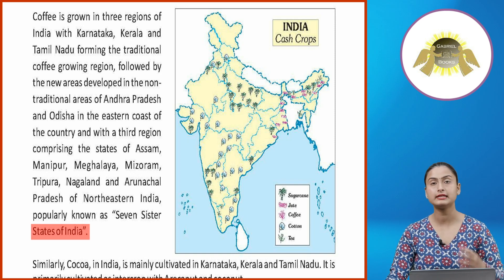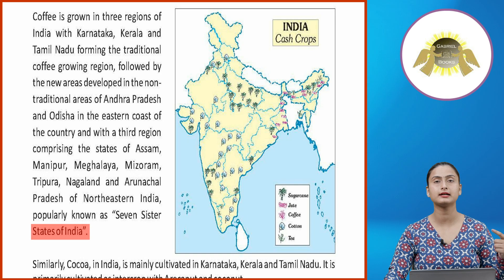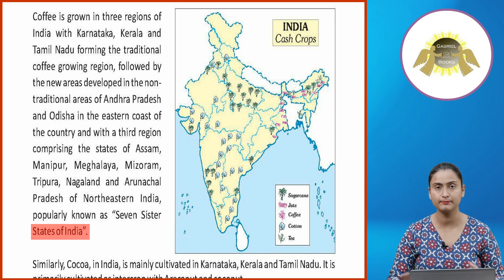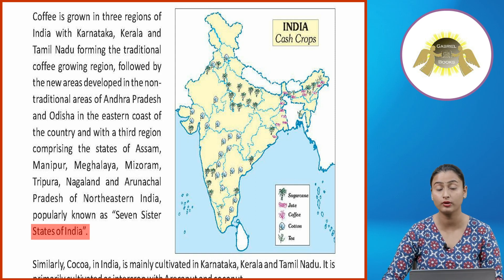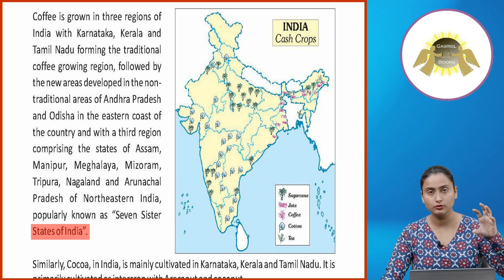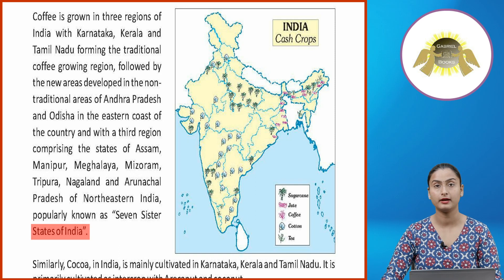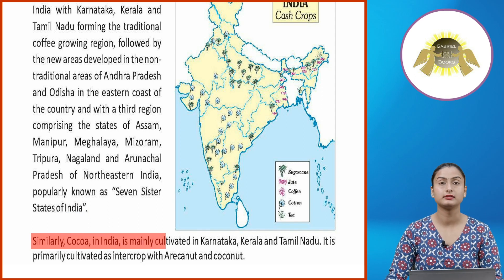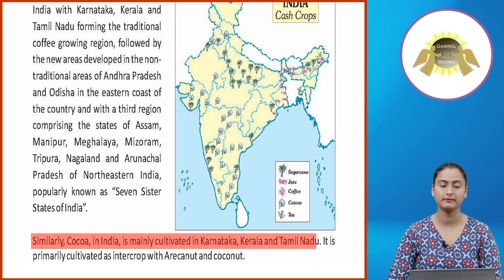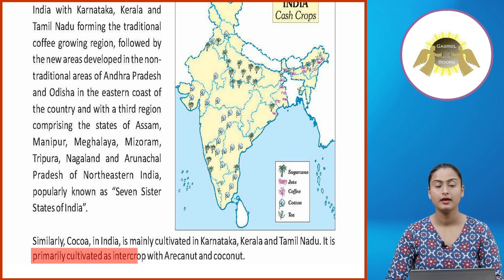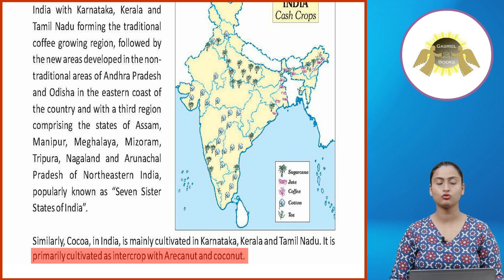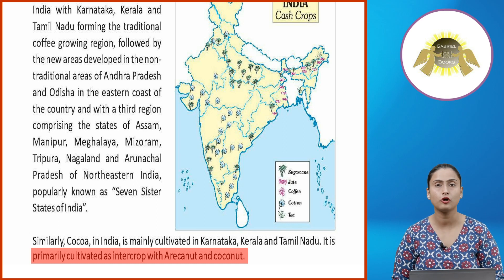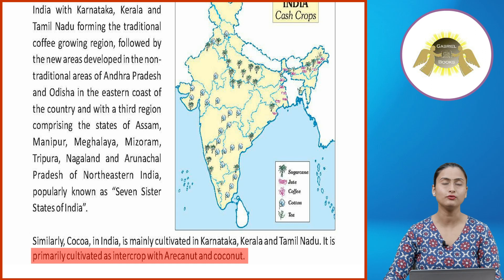The coffee-growing regions include the three conventional states — Karnataka, Kerala and Tamil Nadu — as well as non-conventional areas in Northeastern states. Cocoa in India is mainly cultivated in Karnataka, Kerala and Tamil Nadu. It is primarily cultivated as an intercrop with areca nut and coconut.